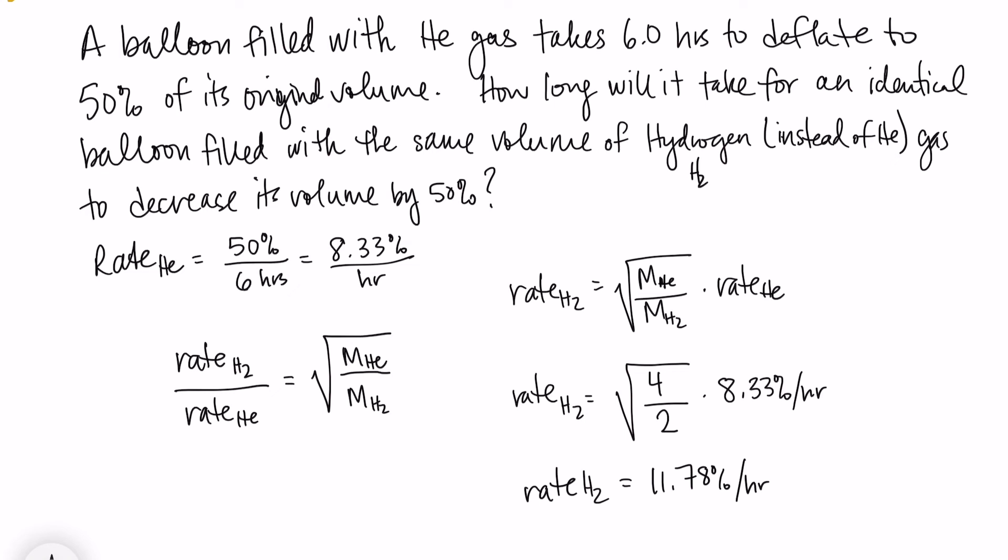Now, I've made good progress on solving this problem, but they asked me not for the rate, but for the time. This is one of the things that's tricky about Graham's Law problems, is that sometimes they're going to ask you for the time instead of the rate. And you have to remember, it's always something per time. In this case, we have percent per hour.